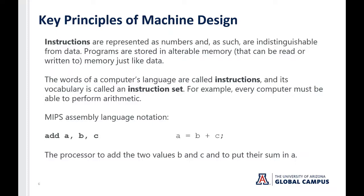If you think about a computer's language, the words a computer uses are called instructions, and its vocabulary is called its instruction set. For every processor, the basic thing it has to do is perform simple arithmetic. Let's look at MIPS assembly language notation. This is the add instruction — we're going to add the value in memory location B and the value in memory location C and store that result in memory location A. In a higher level language like C or Java, we could just write A equals B plus C. But in assembly, we have to specify the instruction and the operands. Together, the instruction and the operands make up a single operation.